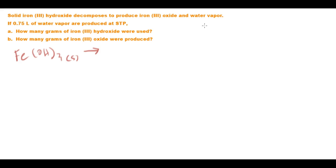So it produces iron 3 oxide and water vapour. Iron 3 oxide is going to be Fe2O3 and that's solid so it's basically rust and some water vapour. So H2O gas.